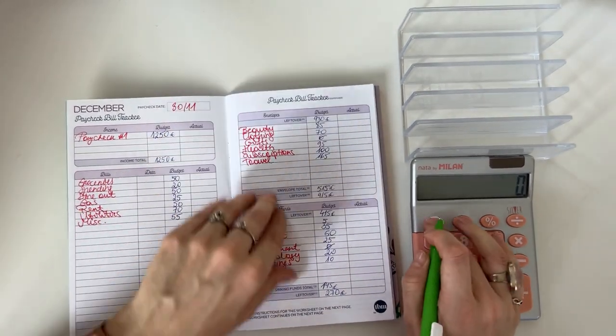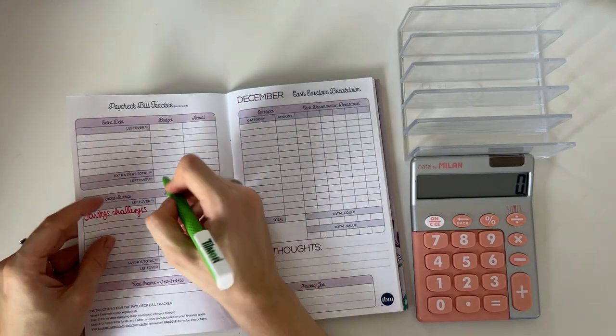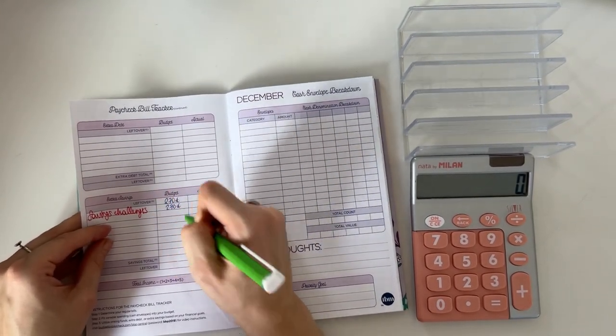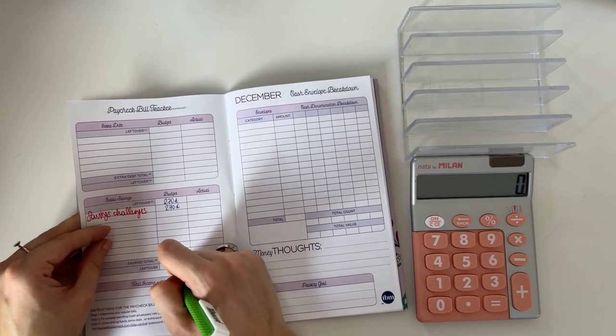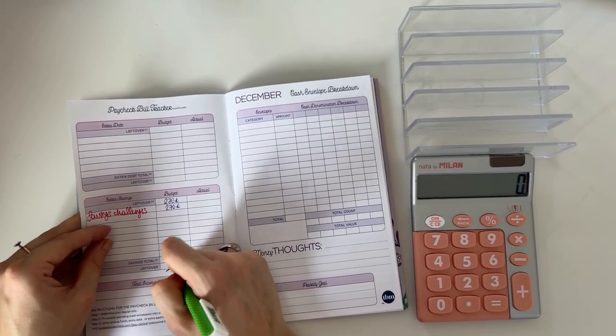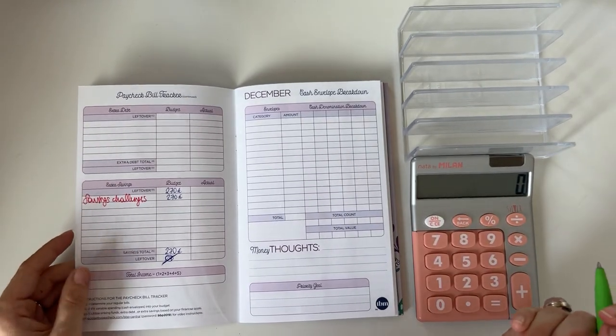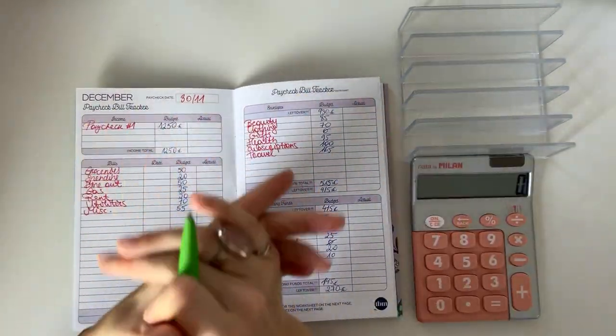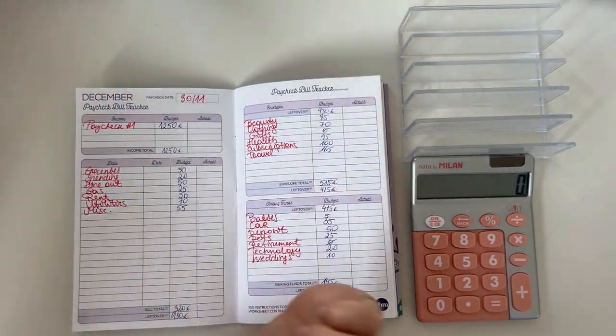270 euros is what we have left and all of that is going to go into the savings challenges. It's going to be a very fun video to film. 270 euros will go into savings challenges, so that will be fun to see. But that is the budget for the first week of December, very exciting.